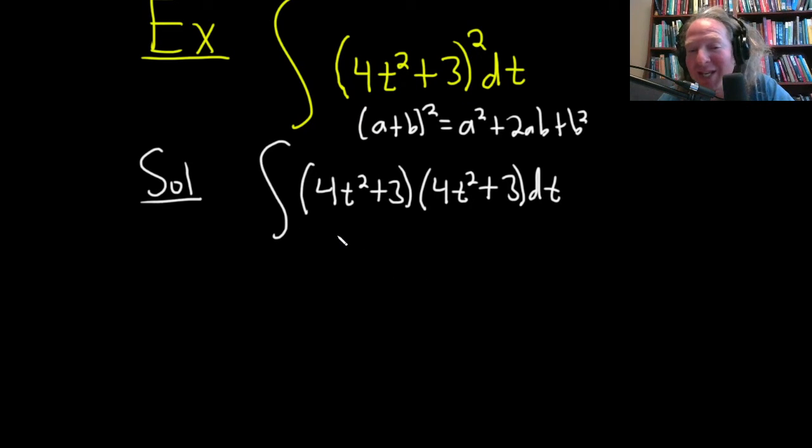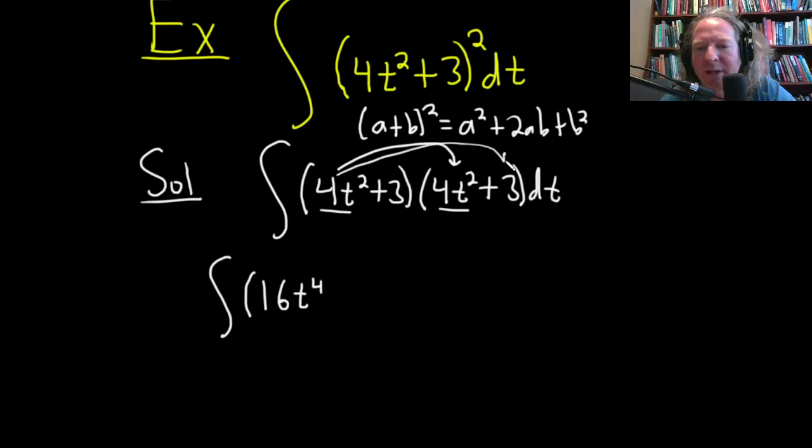So we're not integrating yet. So we still have to write the integral sign. So we're going to do this times this. So that's going to give us, let's see, 4 times 4 is 16. T squared times T squared is T to the fourth. So that'll be 16t to the fourth. Right? And then we'll do this times this. That's going to be 12t squared. Yeah, really nice.